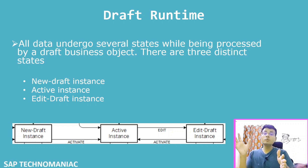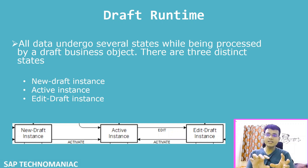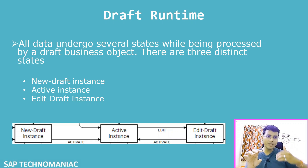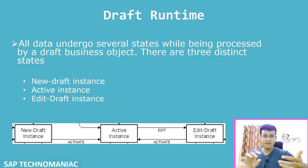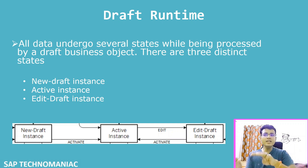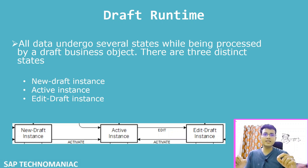These are two states: the new draft instance and the active instance. The third state is the edit draft instance. Suppose you have already created a travel in the database and you want to change something. You copy the data from the active table to the edit draft instance, make your modifications, then convert the edit draft back to the active instance and save to the database.